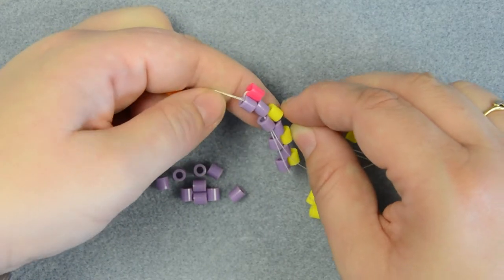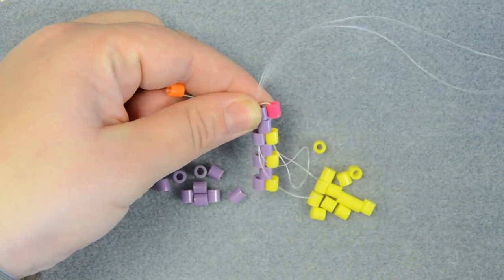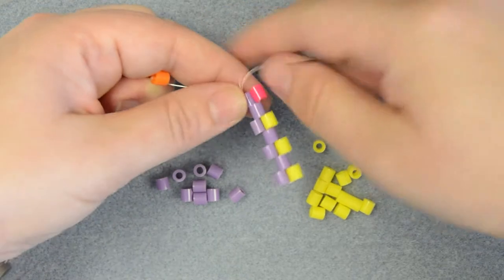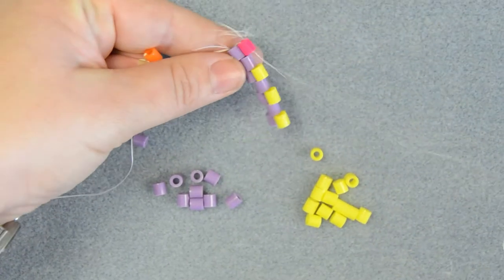And back out what is essentially the first bead of the row, the first of the beads that you put on to start with, and then back through the pink bead and you're in the correct place to start the next row.